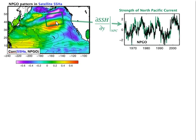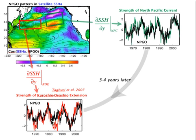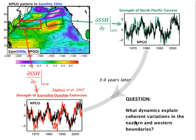A similar analysis can be done in the Kuroshio-Oyashio Extension region, characterized by the red box. This analysis was conducted by Taguchi et al. in 2007, who took the gradient of sea surface height across this region and made an index out of it. They found decadal modulation associated with this index, tracking the strength of the Kuroshio-Oyashio Extension. Comparing the NPGO index with the KOE index, we find that the two indices are strongly correlated — 0.5 — with a lag of three to four years.